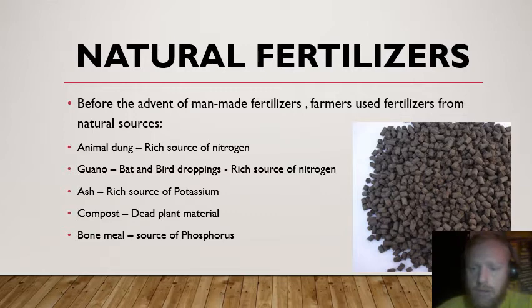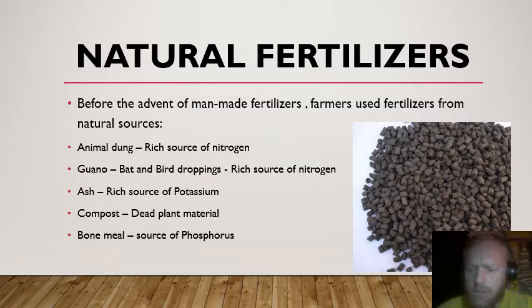What is a natural fertilizer? Before fertilizers were produced in factories, humans just took fertilizer from nature. For example: animal dung; guano, which is bat and bird droppings; ash, which is a good source of potassium; compost, which is dead plant material; and bone meal, which is bones ground into a powder and is a good source of phosphorus. These are all fertilizers we can get from nature.